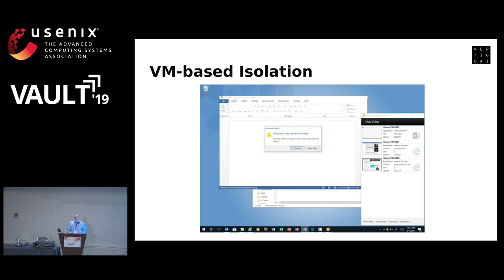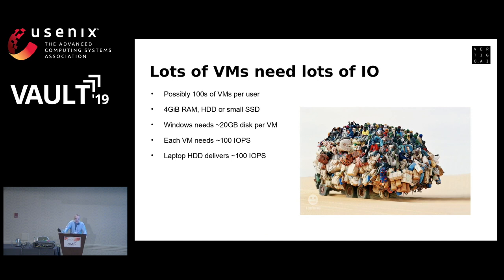It also works with Office. Somebody sends you a Word document with a virus inside — that goes into its own VM. If there's malware, it explodes inside the VM and not onto your system. Back in 2011, this was quite a technical challenge. We wanted to run a hundred VMs on a four-gigabyte laptop with a hard drive. Each VM needs something like 20 gigabytes minimum for Windows. So that's a hundred times 20 gigabytes. When all the VMs are running, they need at least a hundred IOPS from the disk for their swapping, and you only have a hundred IOPS total from your little mechanical hard drive — so how do you deliver that kind of oversubscription?